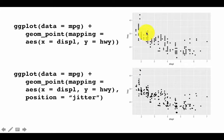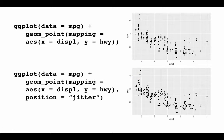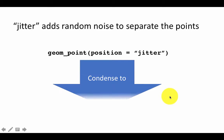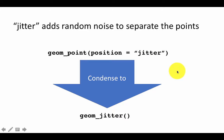Notice here there are two points, whereas before there was only one — that was actually an overplotted point, now made evident by jittering. The jittering is only for display; the underlying data is not changed. Whenever there is overplotting you can use jittering to get more information out of the plot. Instead of saying geom_point with position equals jitter, you can just use geom_jitter, which is a shortcut.